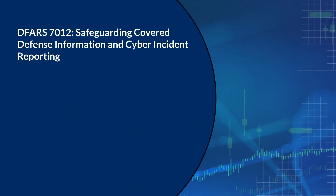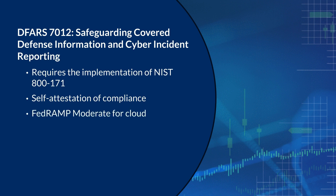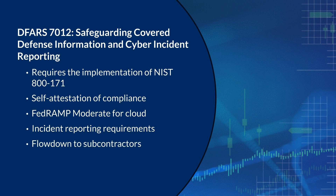DFARS 7012 describes the protection requirements for non-federal systems that process, store, or transmit CUI. 7012 requires the implementation of NIST 800-171. It requires the contractor to self-attest that they are compliant. It also requires that contractor cloud systems that contain CUI meet security requirements equivalent to the FedRAMP moderate baseline. It also establishes incident reporting requirements that extend to cloud service providers, and it requires that prime contractors flow down the clause and its requirements to subcontractors.